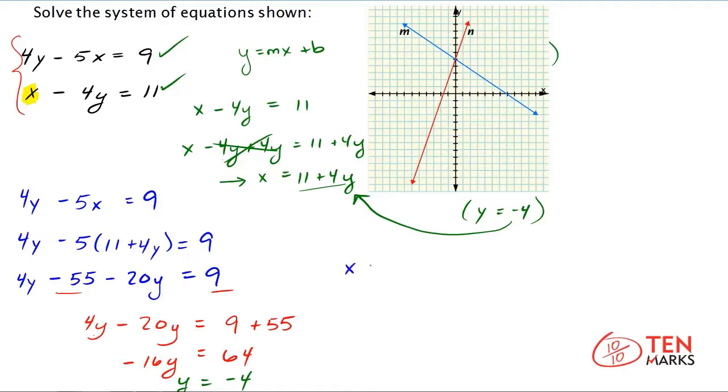If you have the expression x equals 11 plus 4y and you know that y equals negative 4, you get x equals 11 plus 4 times negative 4. Now expand those parentheses. X equals 11 minus 16. And when you do that subtraction you get x equals negative 5.